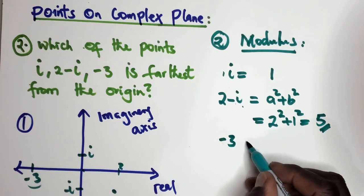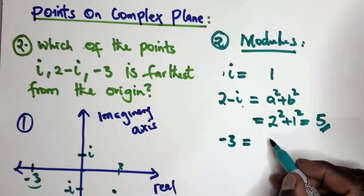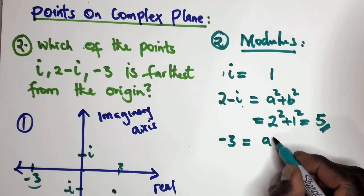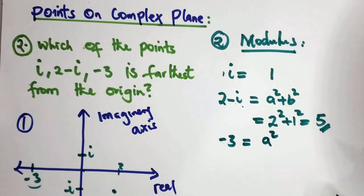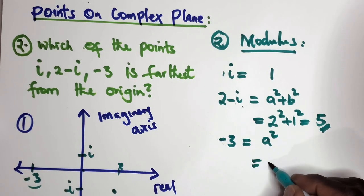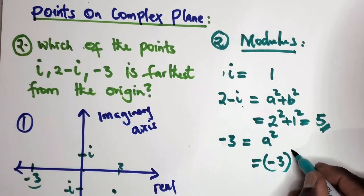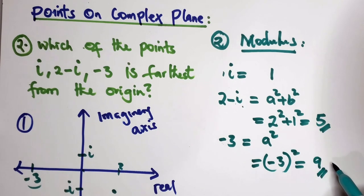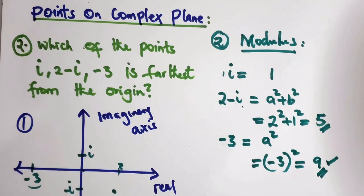Now for minus three, it's the same approach — A squared, because there is no B. That gives you minus three squared, which gives you nine. So nine is the farthest away from the origin. Thanks for your time.